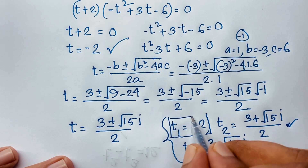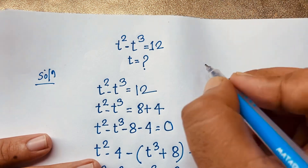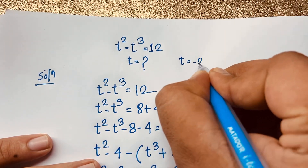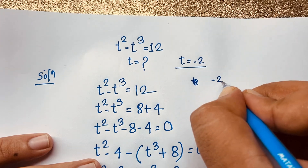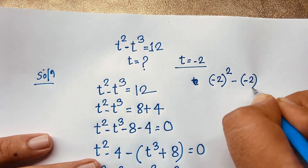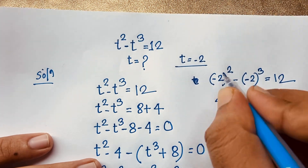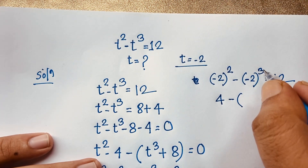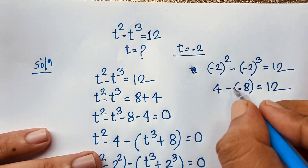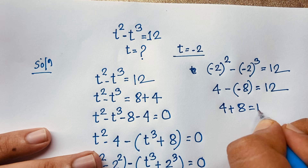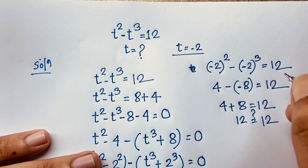Let's check our question. t to the power 2 minus t to the power 3 is equal to 12. We found t is equal to minus 2. If I substitute this: minus 2 to the power 2 minus minus 2 to the power 3 is equal to 12. It is positive because the power is an even number, so it will be 4. 2 to the power 2 is 4, minus 2 to the power 3 is 8, but this is negative 8 because the power is an odd number. So it will be 4 minus negative 8. Minus minus it will be plus, so 4 plus 8 — you can see easily 12. So 12 is equal to 12: left hand side and right hand side are both equal. So t is equal to negative 2 is our correct answer.